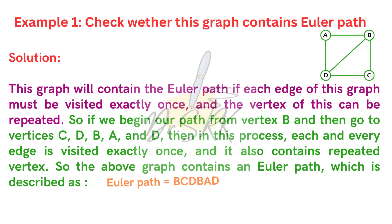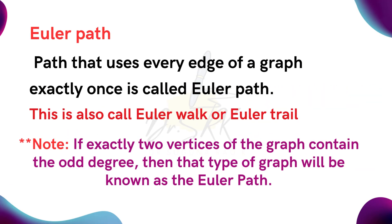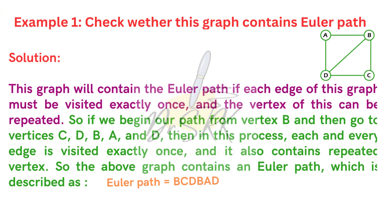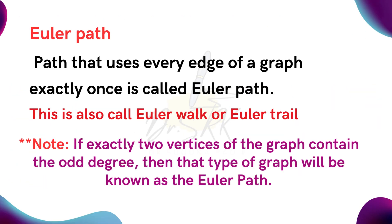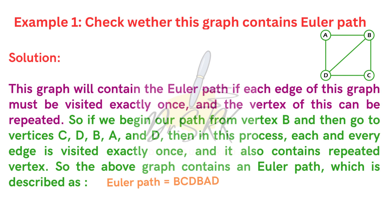What is the note here? If exactly two vertices of the graph contain an odd degree, then the graph has an Euler path. Applying this definition to this example, this graph will contain the Euler path. An Euler path exists when each edge of this graph must be visited exactly once, and the vertices of this graph can be repeated.